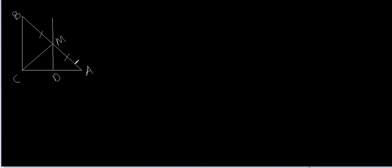Now let's come to our last problem in which we have a right-angle triangle right-angled at C. The midpoint of the hypotenuse AB is M, through which a line is drawn parallel to BC and meets AC at D. We have been asked to prove that CD is equal to DA, that MD is perpendicular to AC, and that CM is equal to AM.